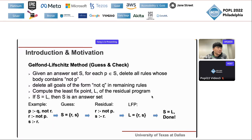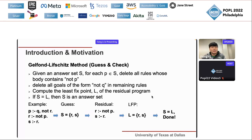Here is an example. Suppose we have: p if q, not r; r if not p; and s if r. We guess the answer set will be {r, s}. The residual program removes the first rule because our guess contains r, leaving: r if not p, and s if r. The least fixed point of this is {r, s}. Comparing with our guess, they are identical, so {r, s} is an answer set for this program.